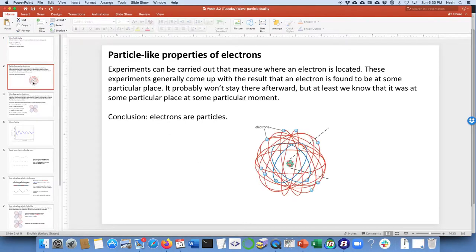Let me go back to the Rutherford model of an atom. You can design and carry out experiments that measure where an electron is. Those experiments generally come up with the result that they find an electron somewhere at some particular place. It probably won't stay there afterward for very long, and there's other quantum mechanical theories like the uncertainty principle that play in there. However, the point is that when we do that measurement, we know that the electron was at some particular place at some particular moment, from which we conclude electrons must be particles.